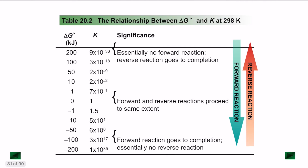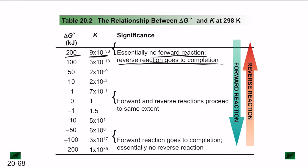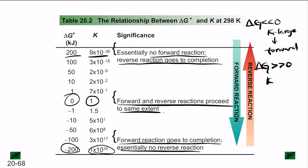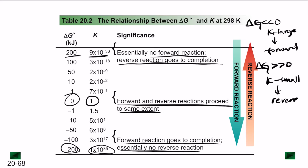When the K value is very small, there is essentially no forward reaction and the reverse reaction generally goes to completion as delta G becomes very large. When delta G becomes very small and K becomes very large, the forward reaction goes to completion and there is essentially no reverse reaction. When K equals 1, delta G equals 0 and forward and reverse reactions proceed to the same extent. For a forward reaction, delta G must be much less than 0 and K must be large; for a reverse reaction, delta G is much greater than 0 and K is small.